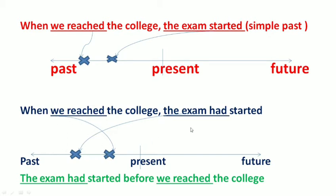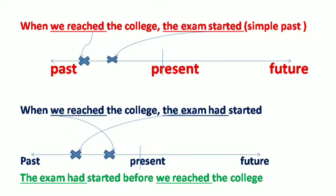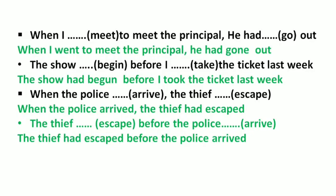In 'When we reached the college the exam had started,' the exam had started earlier than we reached, so it is the more past action and goes in past perfect. On a timeline, 'the exam had started' comes first, then 'we reached.' You can also say: 'The exam had started before we reached the college.'